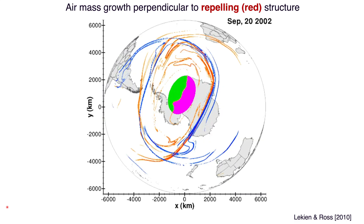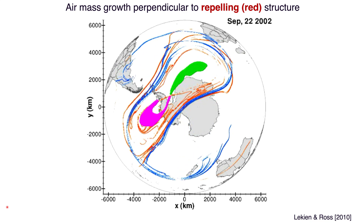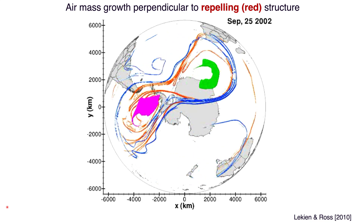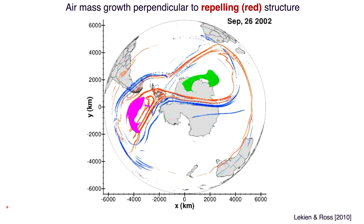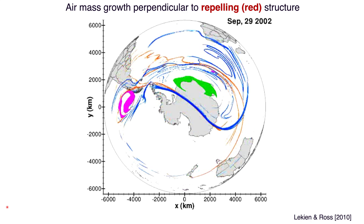If we look in detail at exactly how the splitting occurs, we can see air mass growth perpendicular to the repelling structure that grows in the middle. The purple and the green were air masses on either side of a repelling structure.